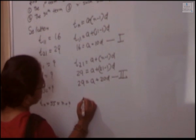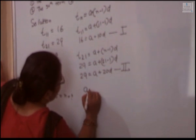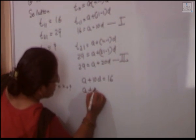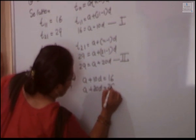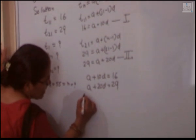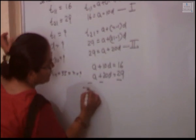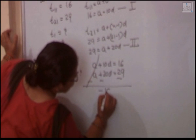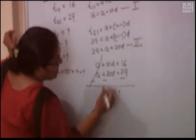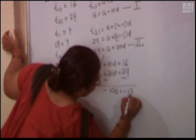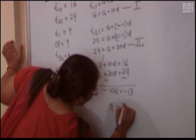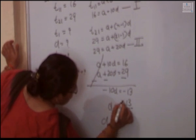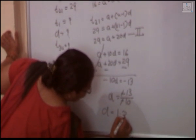From equation 1 and equation 2: A plus 10D equal to 16, and A plus 20D equal to 29. The signs are the same, so we change one sign and subtract. A and A cancel. 20D minus 10D gives 10D, and 29 minus 16 gives 13. So 10D equal to 13, which gives D equal to 1.3.